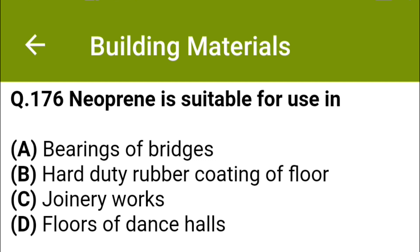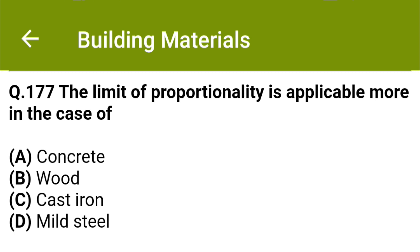The limit of proportionality is applicable more in the case of: option A concrete, option B wood, option C cast iron, option D mild steel. The correct answer is option D: mild steel.